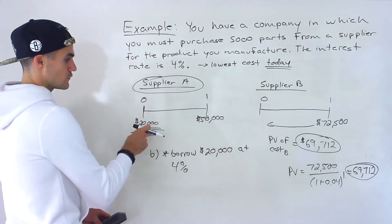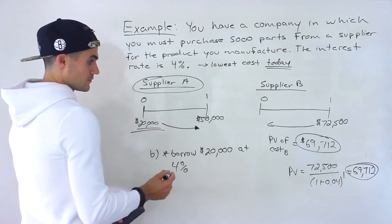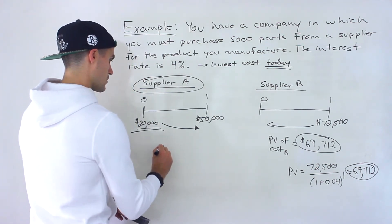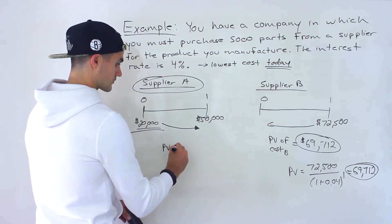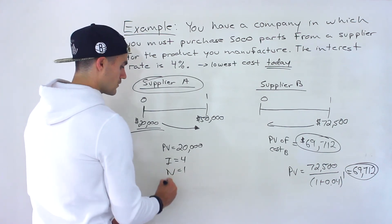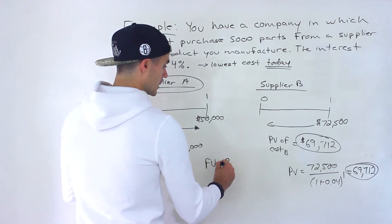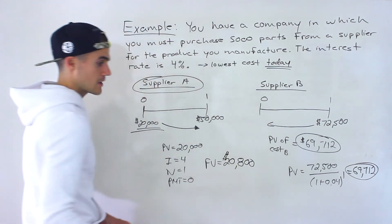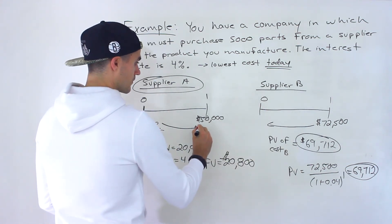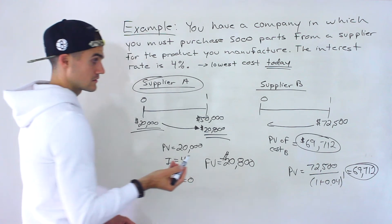If you borrow $20,000 today at 4% for one year with no other payments in between, when you solve for the future value you get $20,800. So that's the total amount you'll have to pay back. You'll have to pay back $20,800 to the lender and also pay the $50,000 to the supplier.